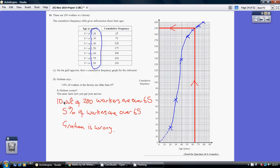He's confusing percentages with the actual figures. So just to go over that again, I've approached this question by finding out what percentage are over 65, and I'm saying it's 10 out of 200, which is 5%. So that's why Graham is wrong.